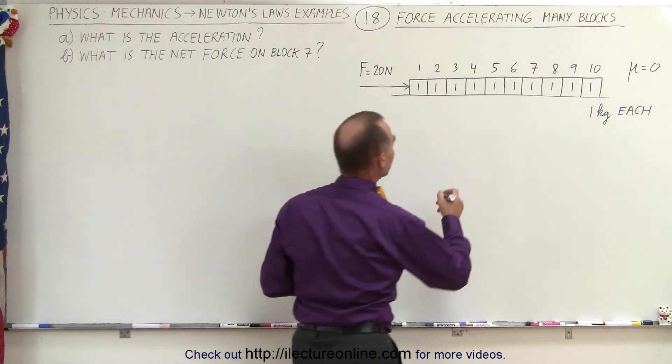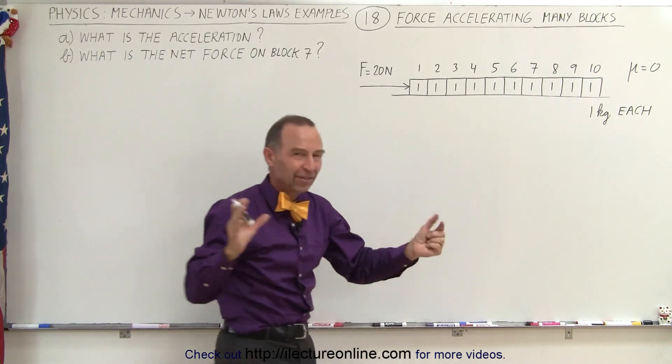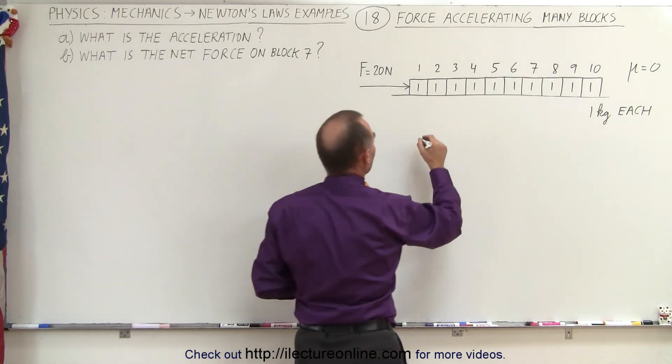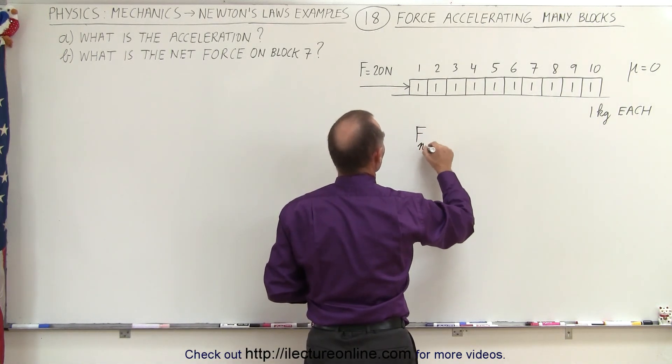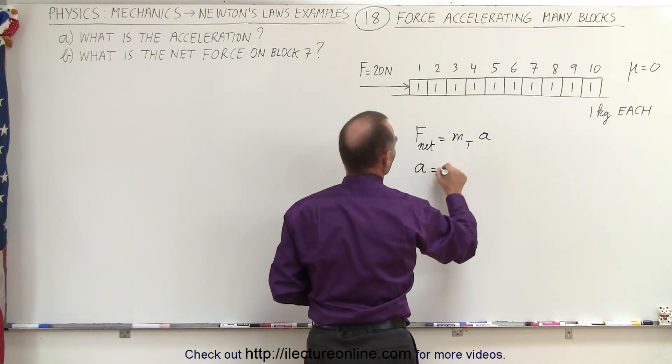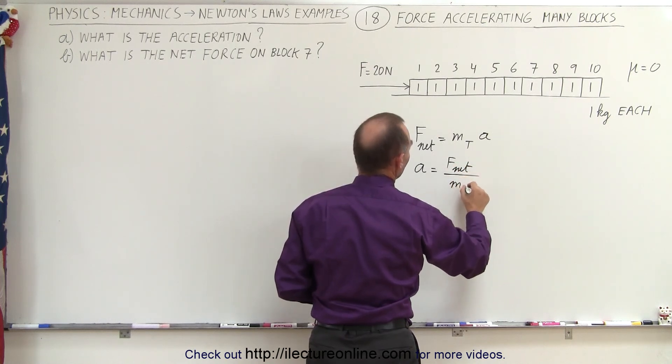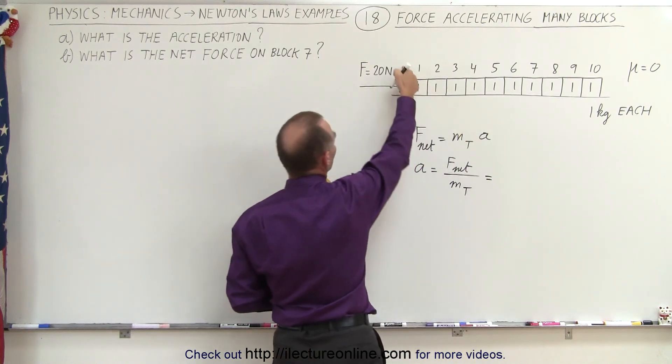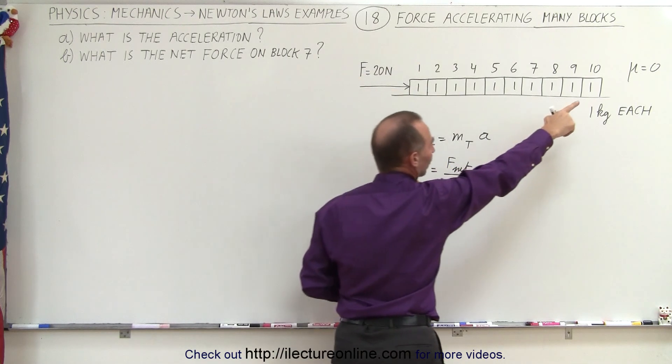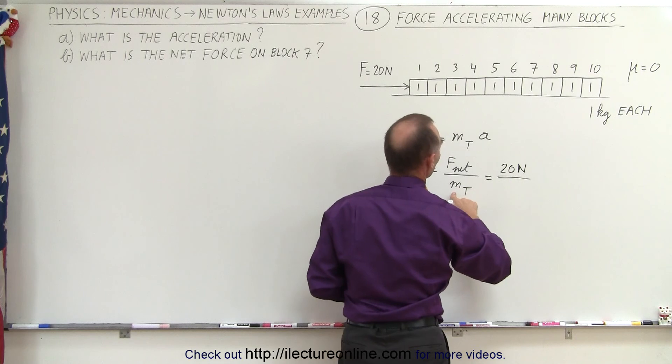And so the first thing we do is we take a look at the thing as a whole system, so we act as if it's one continuous block, and we say that the F net on the whole system is equal to mass total times acceleration, or the acceleration equals the net force divided by the total mass. And in this case, the net force is the force applied, since there's no friction, mu is equal to zero, and we divide that by the total mass.